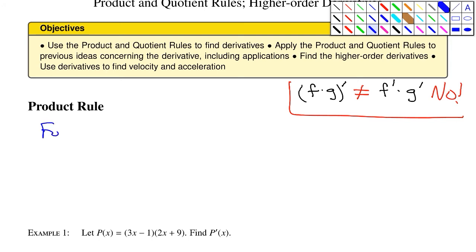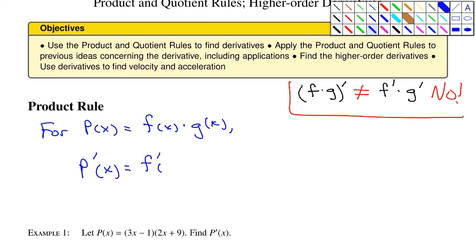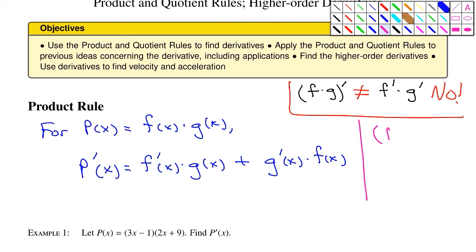So what is the product rule? For p of x equal to f of x times g of x, p prime of x — the derivative — is equal to f prime of x times g of x, plus the derivative of g of x times f of x. It's a mixture of derivatives of f and g and the regular functions of f and g mixed together. In shorthand notation, the derivative of f times g equals f prime g plus g prime f.